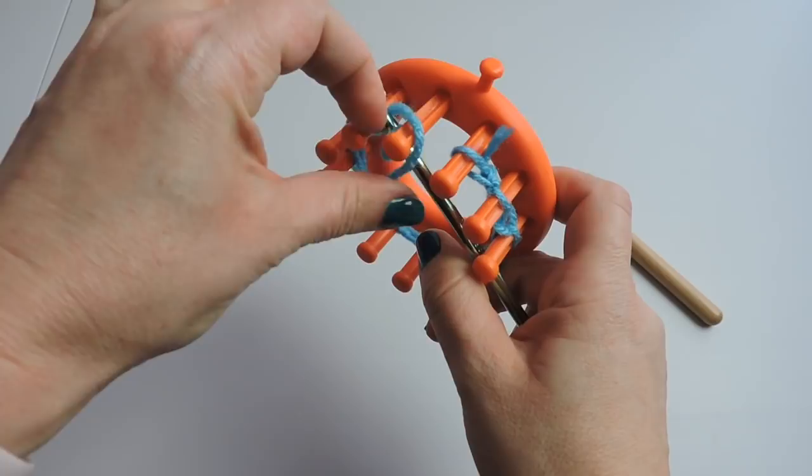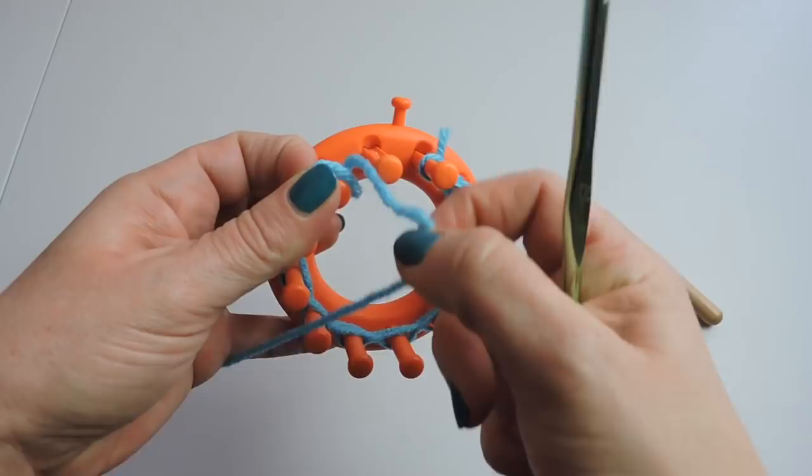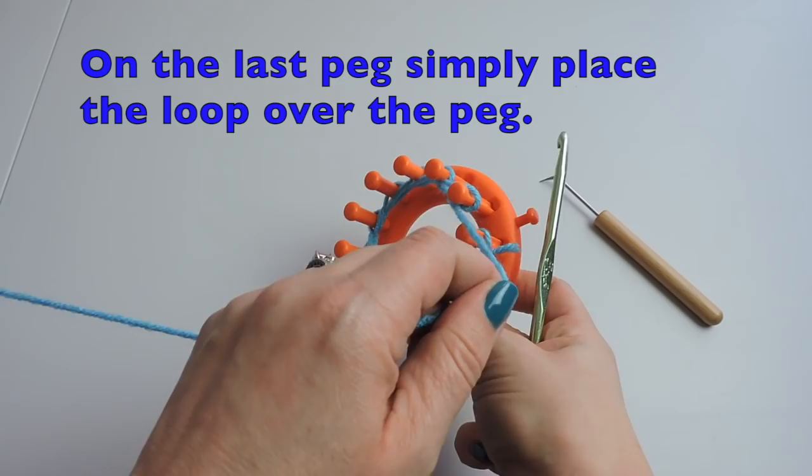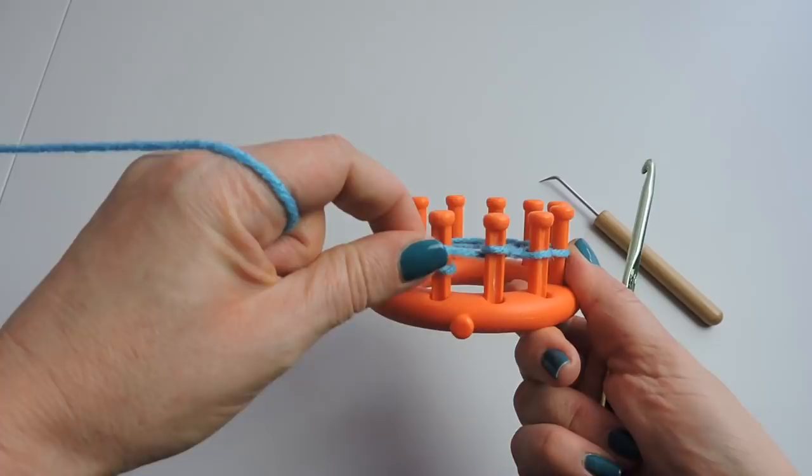Okay, we are at the last peg. Place that working yarn in front of the peg and take the loop and place it on top of the last peg, just place it over the peg.